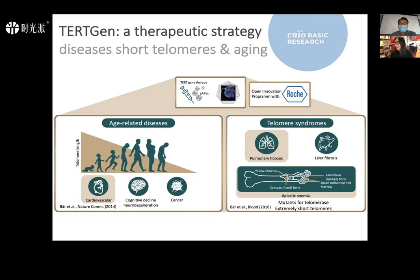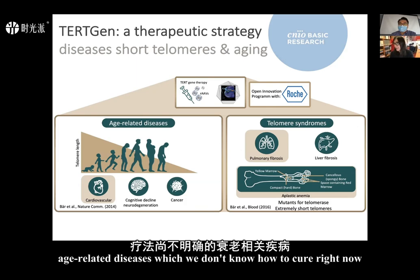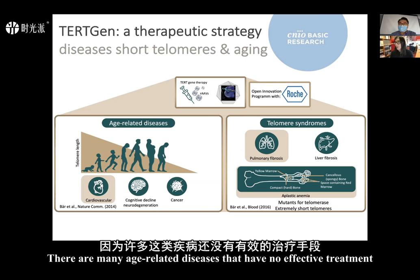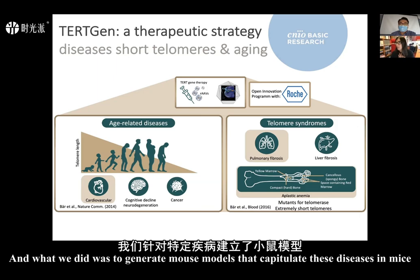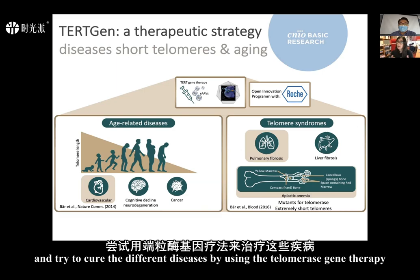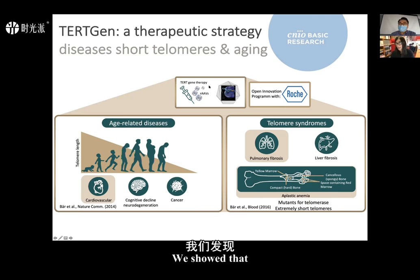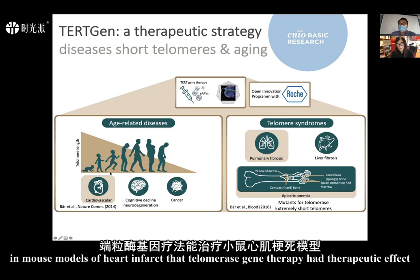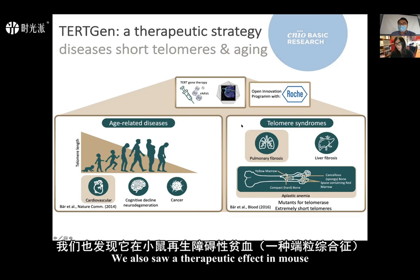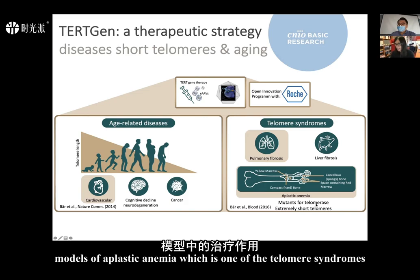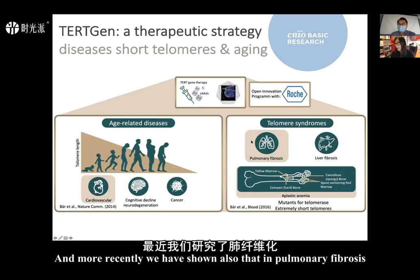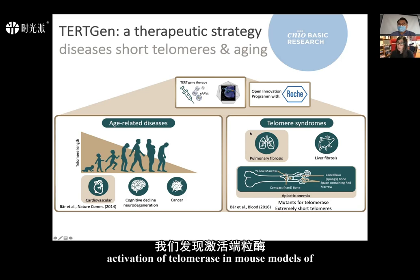The priority is to have treatments for age-related diseases that currently have no effective treatment. We generated mouse models recapitulating these diseases and tried to cure them using telomerase gene therapy. We showed therapeutic effects in mouse models of heart infarct, aplastic anemia, and pulmonary fibrosis — activation of telomerase in these models had a therapeutic effect.